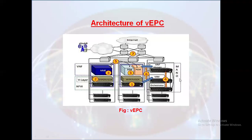Next, we'll move on to MANO, which we are calling Management and Orchestration. MANO is a critical component of Virtualized Evolved Packet Core architecture and is responsible for managing and orchestrating Virtualized Network Functions, VNF. MANO includes functions such as VNF lifecycle management, resource allocation, and network service orchestration. This MANO enables network operators to efficiently manage VEPC resources, ensure seamless service delivery, and optimize network performance.